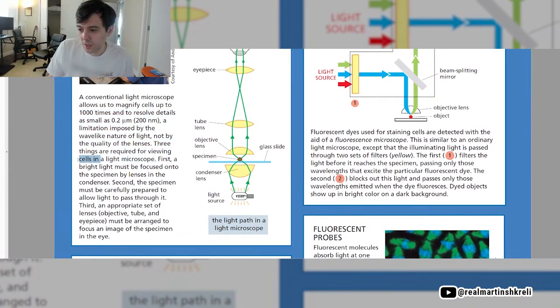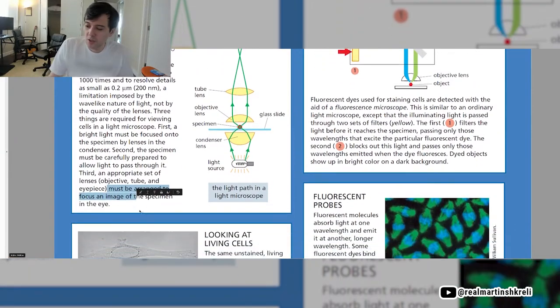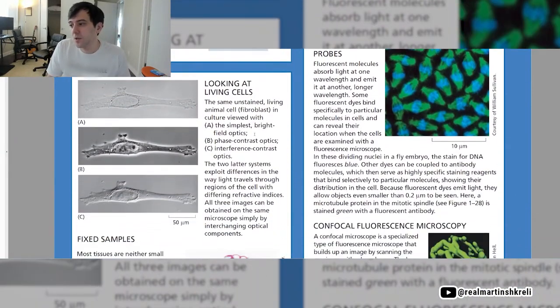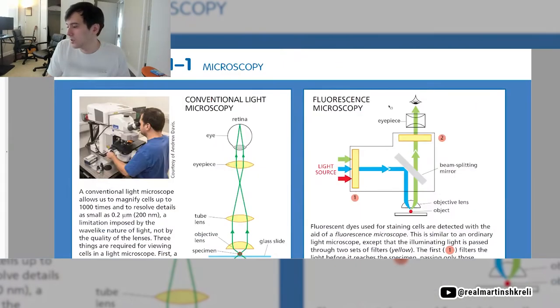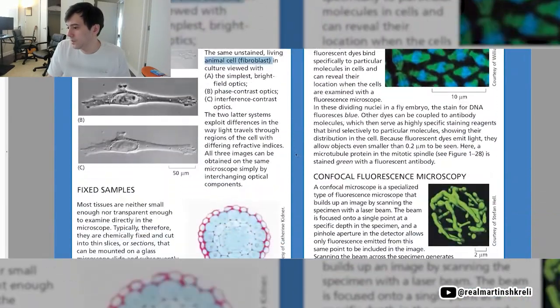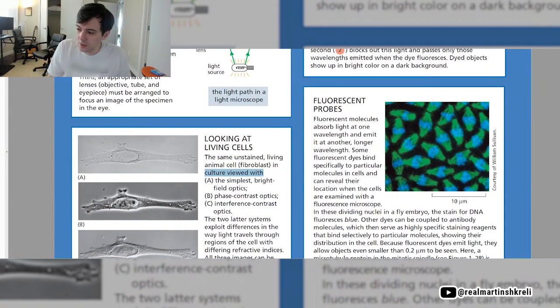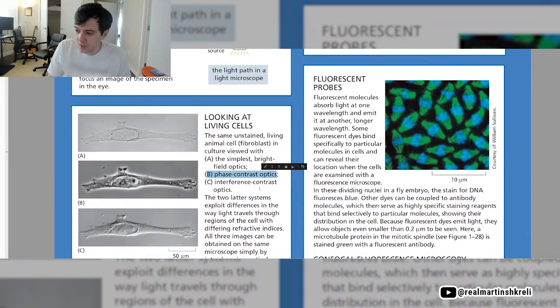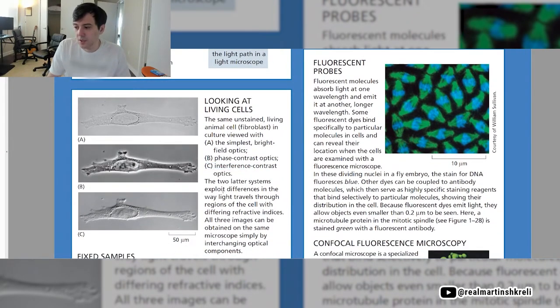Three things are required for viewing cells in the light microscope. First, a bright light must be focused onto the specimen by lenses in the condenser. Second, the specimen must be carefully prepared to allow light to pass through it. Third, an appropriate set of lenses must be arranged to focus the image of the specimen. Looking at live cells, the same unstained living animal cell, a fibroblast, is viewed with the simplest bright field optics, phase contrast optics, and interference contrast optics. You can see they're quite different qualities. The two latter systems exploit differences in the way light travels through regions of the cell with differing refractive indices.